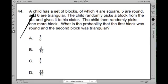Number 44: A child has a set of blocks of which four are square, five are round, and six are triangular. The child randomly picks a block from the set and gives it to his sister. The child then randomly picks one more block. What is the probability that the first block was round and the second block was triangular?